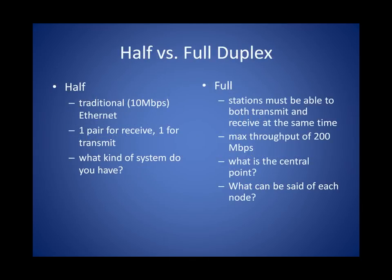Half duplex means that only one node is talking on the network at a time — you can transmit or receive, but not both. Traditional Ethernet, in this case 10-megabit Ethernet, is a half-duplex system. The central node is a hub, collisions can occur, and nodes must contend for bandwidth. This uses one pair of wires for receiving and one for transmitting, called a bus or broadcast system — not to be confused with broadcast frames. Full duplex means you can transmit and receive at the same time. On a 100-megabit network, that means maximum throughput of 200 megabit, and the central node must be a switch. Each node is said to be in its own collision domain.